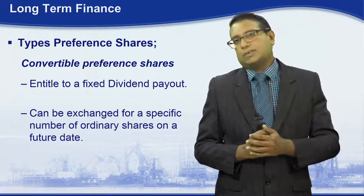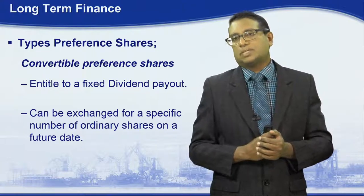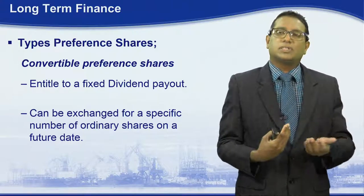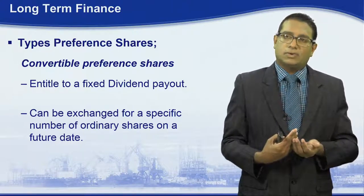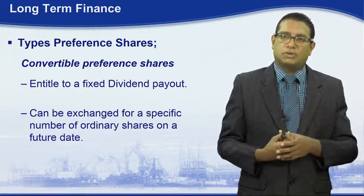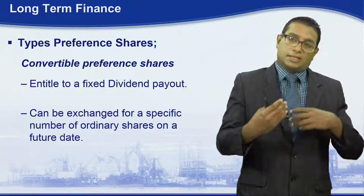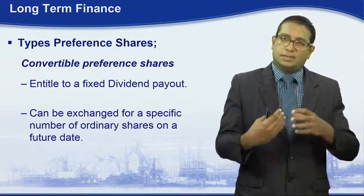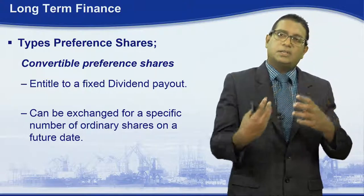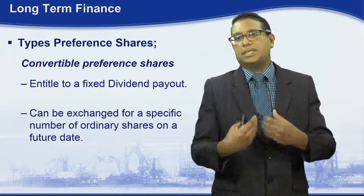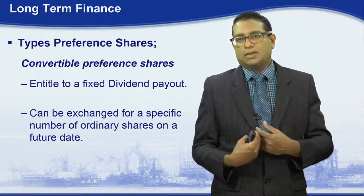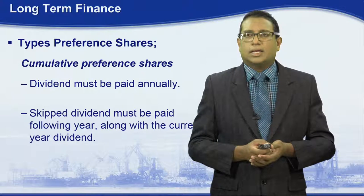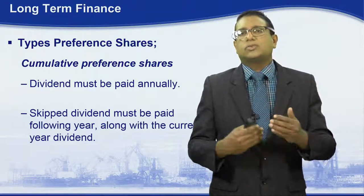The last type is convertible preference shares. Being a preference shareholder, they will receive a fixed amount of dividend. The advantage here is that convertible preference shares can be exchanged for a specific number of ordinary shares on a future date.